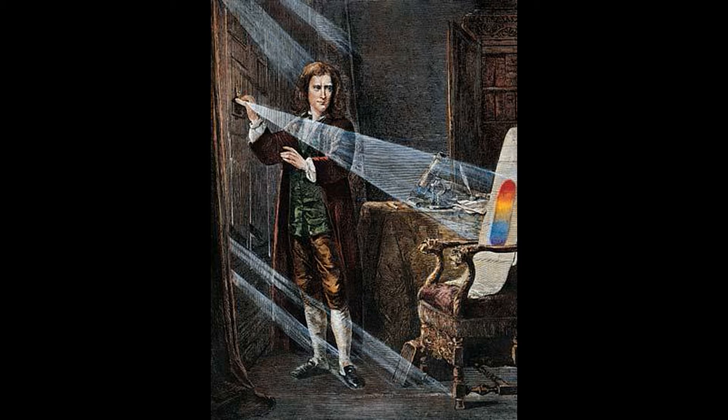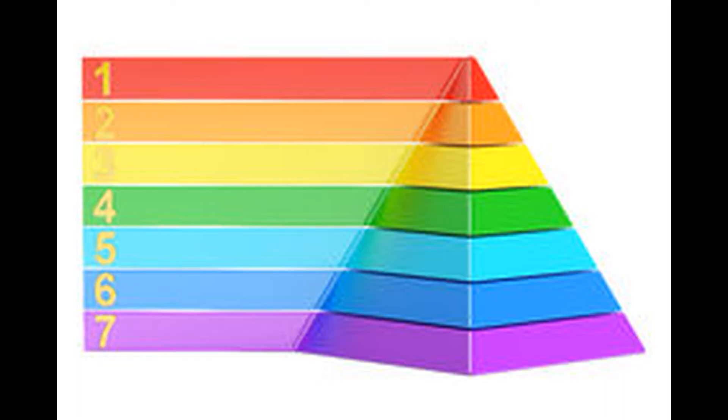Surprisingly, he discovered that the white light split into seven different colors. When he did the experiment, many people thought that the prism had seven colors and not the white light.